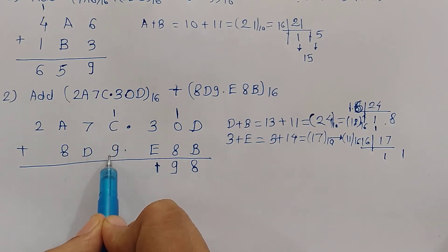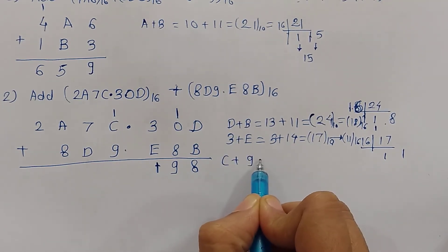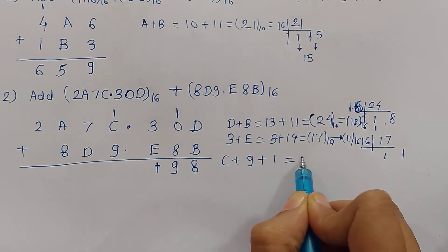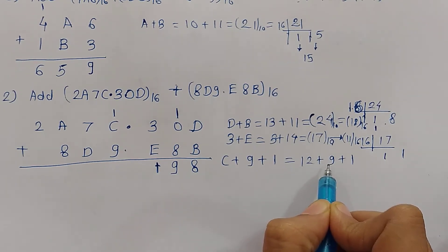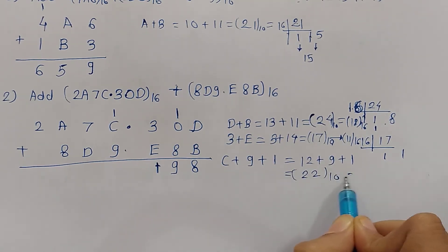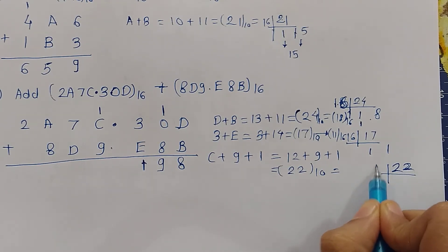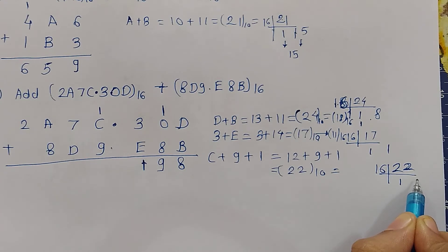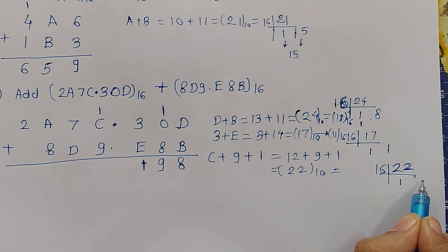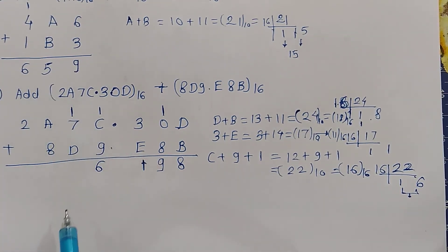Now the next digit: C plus 9 plus 1. The equivalent of C is 12. So 12 plus 9 plus 1 is 22. We need to convert 22 decimal into hexadecimal. Dividing 22 by 16, 6 remains. So the hexadecimal equivalent of 22 is 16. We write 6 and carry 1 to the next digit position.